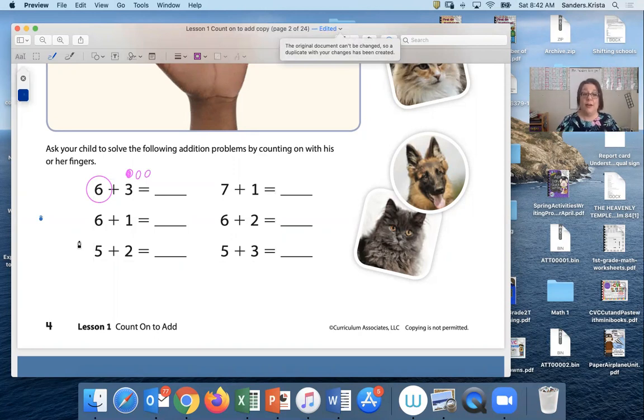And then I'm gonna count on. Ready? We're gonna start with 6. Put 6 in your hand. Here we go. 6. And then put 3 on your hand. 7, 8, 9. What's our total? 9.